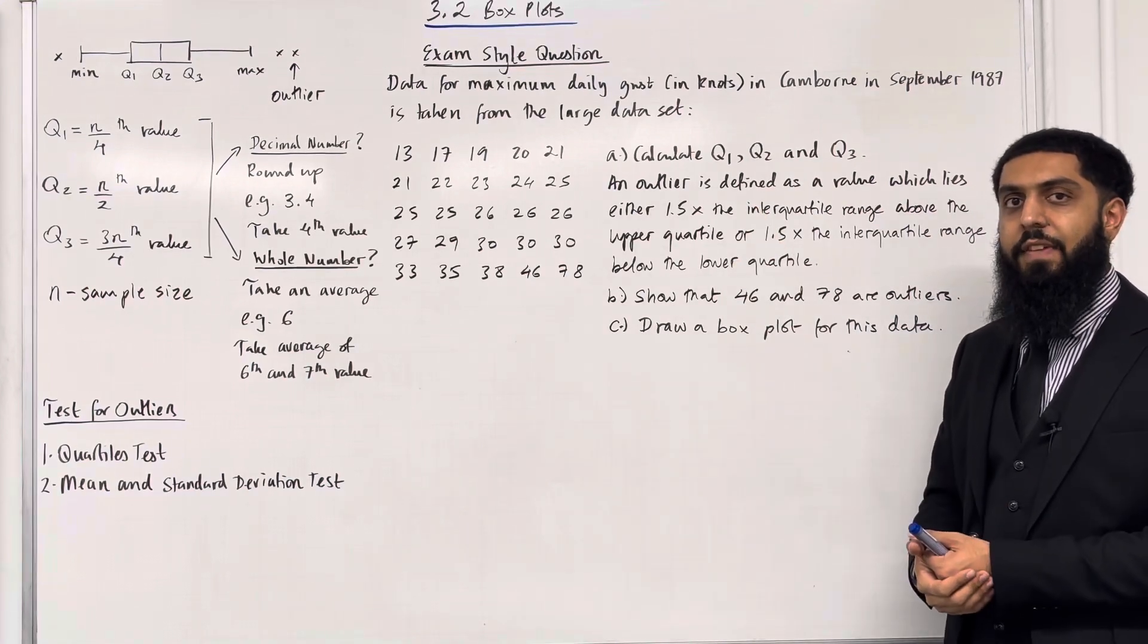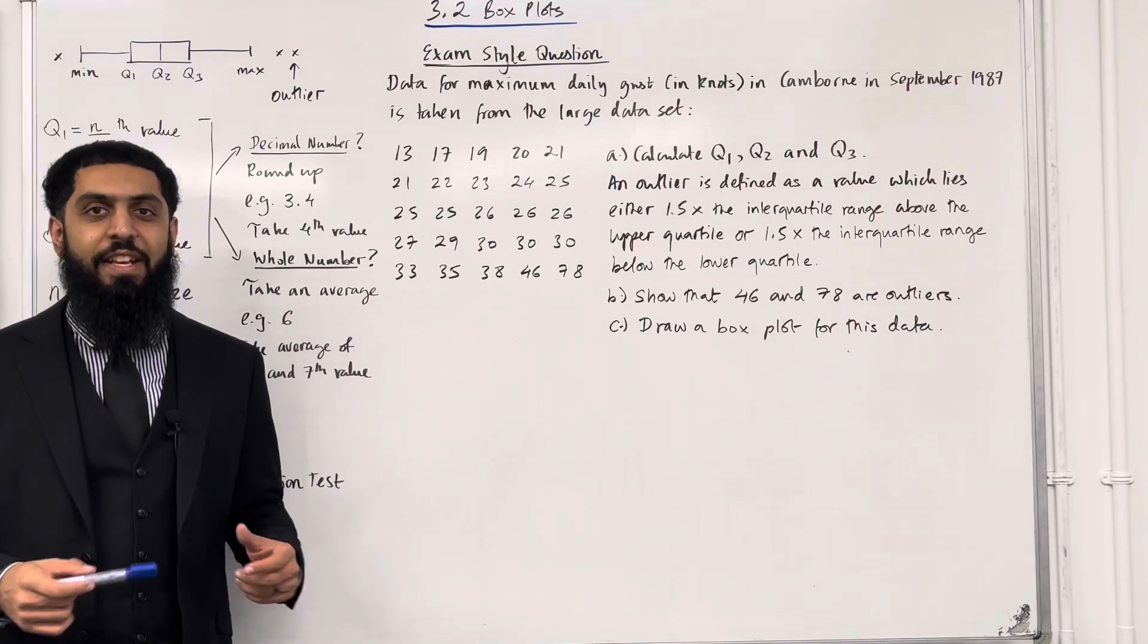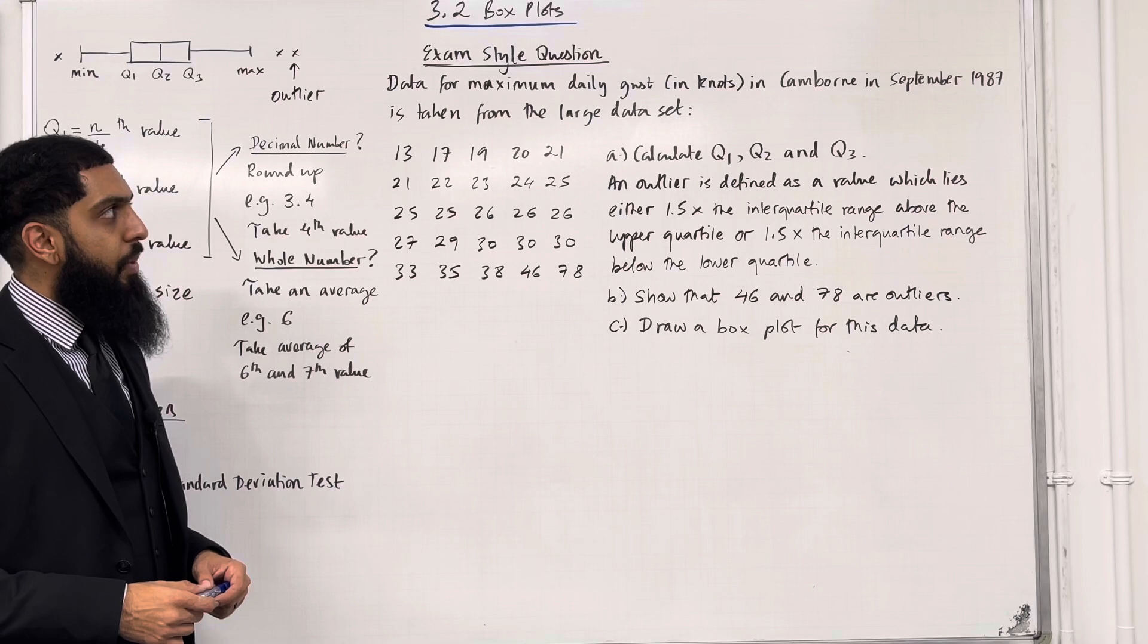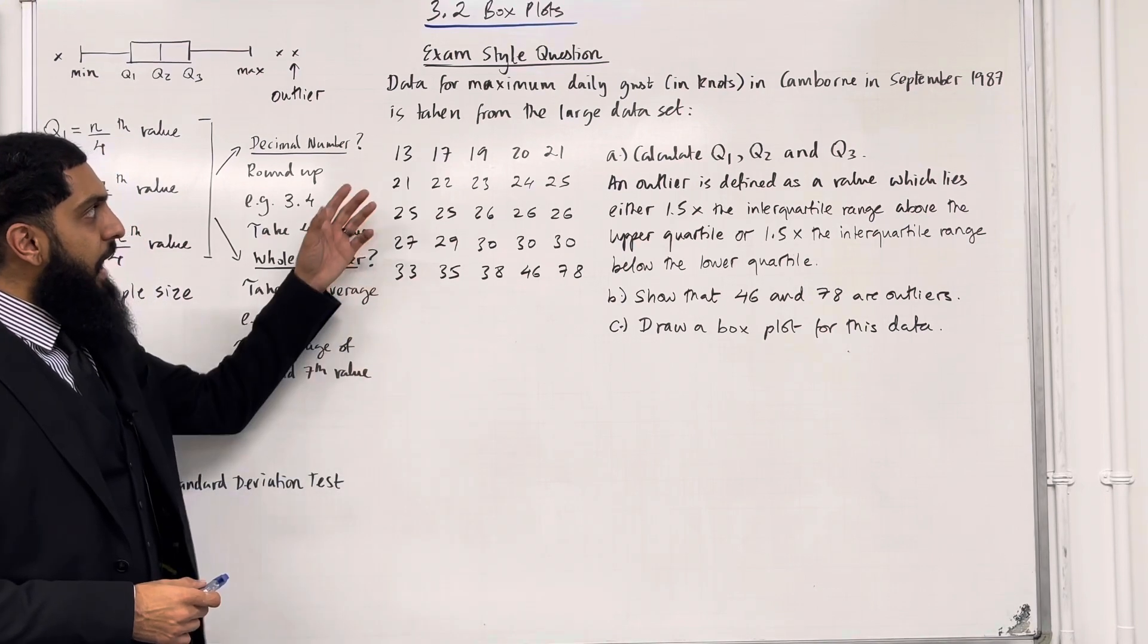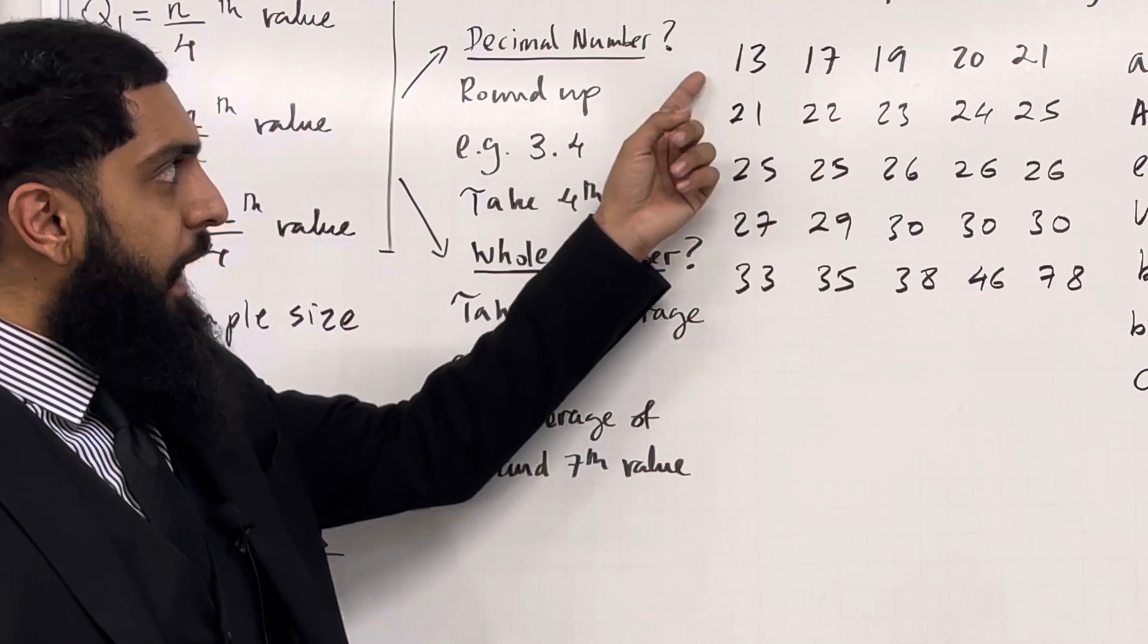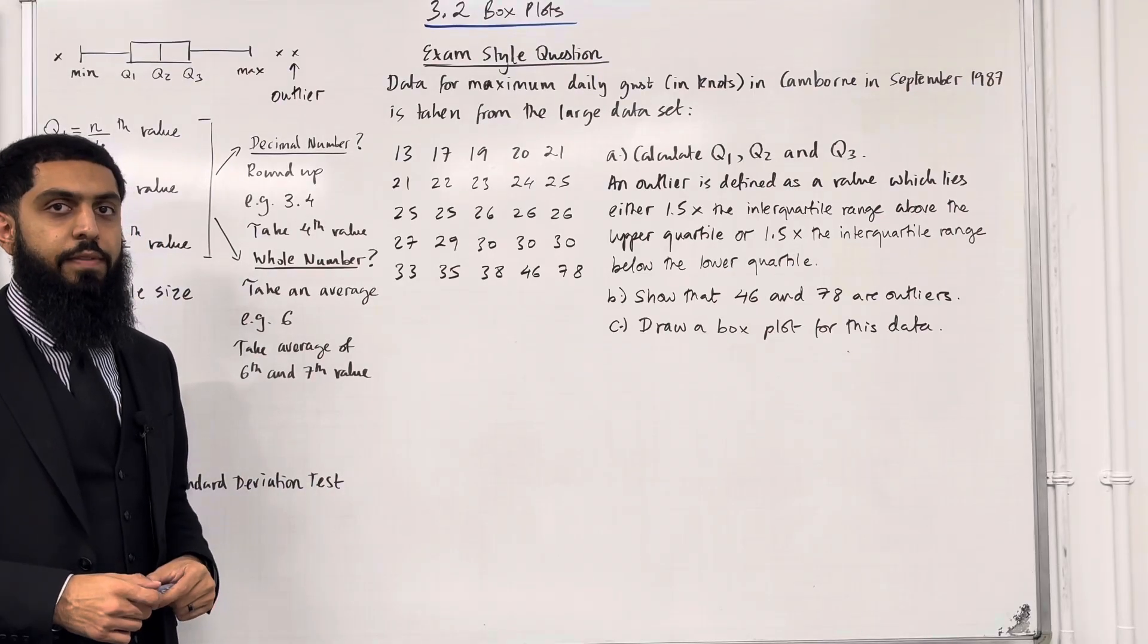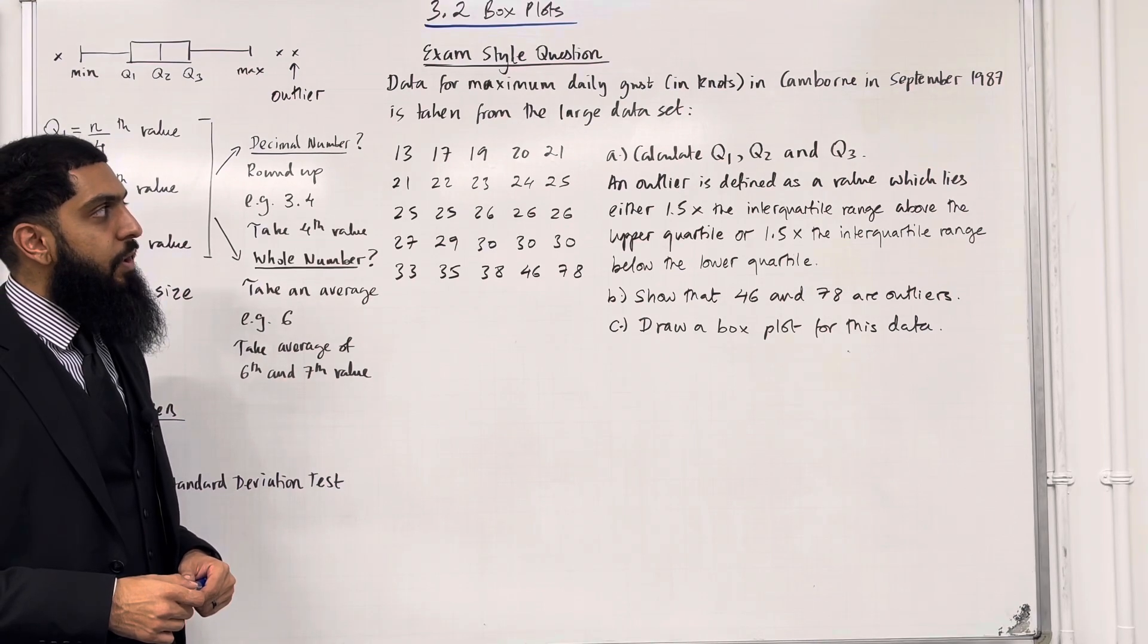Let's have a look at an exam style question. Data for maximum daily gusts in knots in Camborne in September 1987 is taken from the large data set. The sample size is 25. Part A: calculate Q1, Q2, and Q3.